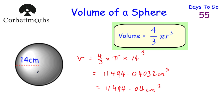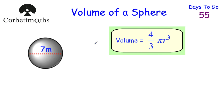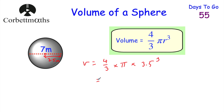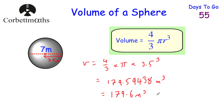And that's how we find the volume of that sphere. For the next question, we've got another sphere — feel free to press pause and find the volume. The diameter is 7 metres, so the radius is 3.5 metres. So we do 4/3 × π × 3.5³, which gives us 343/6 π, or 179.6 metres cubed to one decimal place.